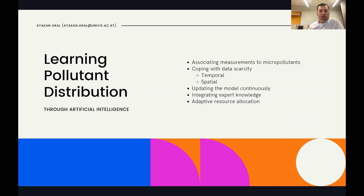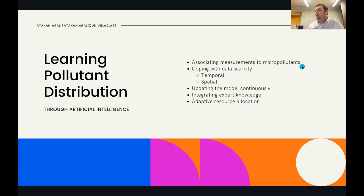The second class of problems focuses on learning the pollutant distribution in the river — the machine learning part. I use artificial intelligence and machine learning interchangeably; machine learning is technically a subclass of AI. For learning pollutant distribution, a key problem is that we cannot directly measure micropollutants, but we can measure other parameters that could be associated with them — and this association is a task for artificial intelligence.